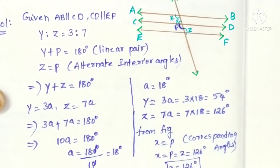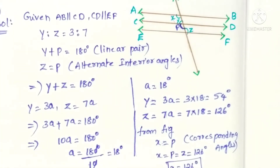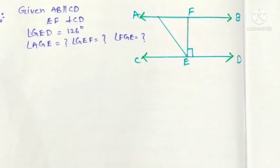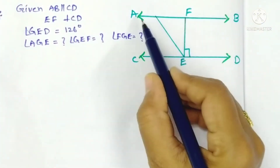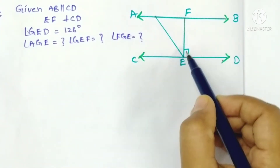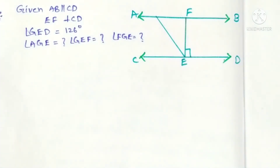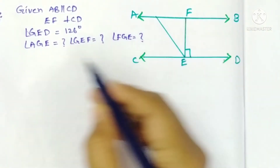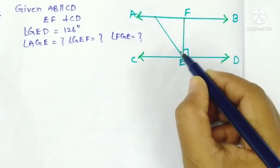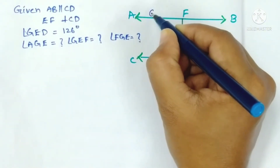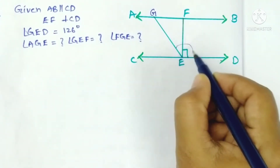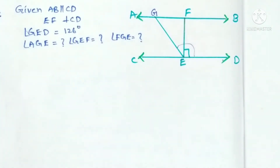Now the third problem: in the given figure, AB is parallel to CD, EF is perpendicular to CD, and angle GED equals 126 degrees. We need to find the required angles.